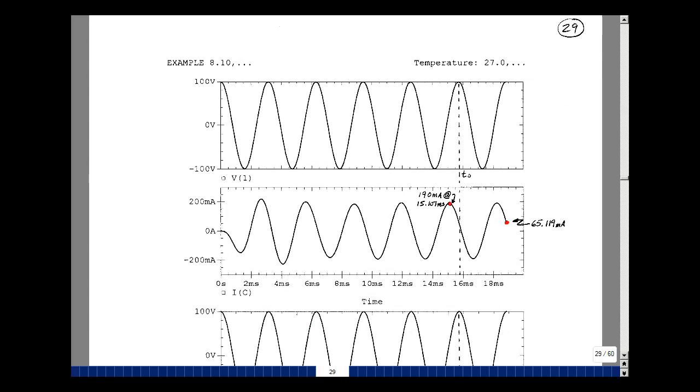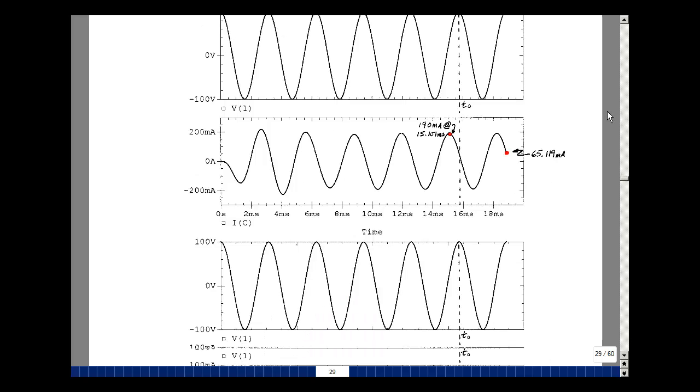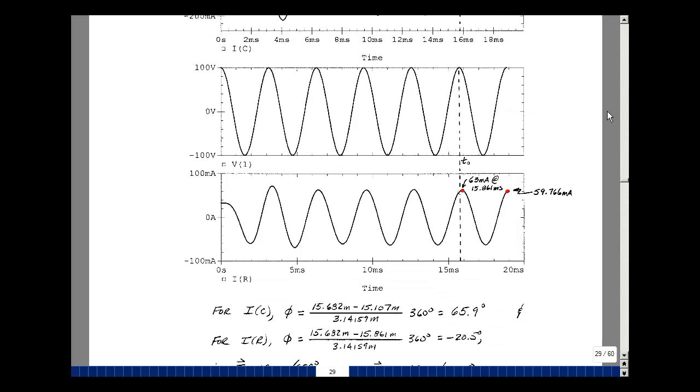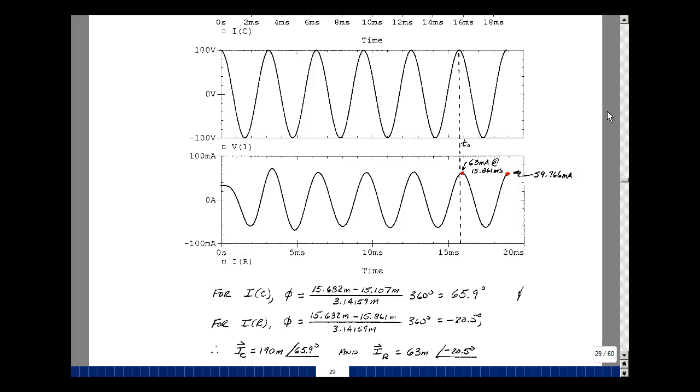Let's likewise find the current in the capacitor. I asked for I of C here. You can see again in steady state with respect to T0, I've shifted to the left. That occurs at 15.107 milliseconds, and the peak value is 190 milliamps. I also marked the point here towards the end of the simulation, it was 65.119 milliamps. We can calculate the magnitude and angle of the phasor. Magnitude is 190 milli. The angle would be the difference between T1 subtracted from T0. T0 was 15.682 milliseconds, and then we had 15.107 milliseconds divided by the period times 360 gets 65.9. So my current as a phasor is 190 milliamps at angle 65.9. We had calculated this to be 189.71 milliamps at an angle of 71.565. So we're approaching the value in steady state. A few more cycles here would make this more precise.